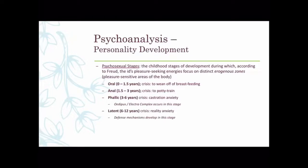In the latency stage, there isn't an erogenous zone associated — this stage represents a pause in sexual interest and development. The child faces reality anxiety, and the main crisis is navigating social waters as they enter school and various social situations. Then in the genital stage, the pleasure center shifts back to the genitals. We mature our sexual interests and seek to form mutually satisfying bonds with others, developing sexual interests appropriately.